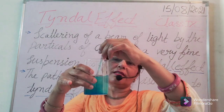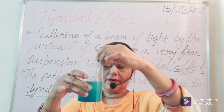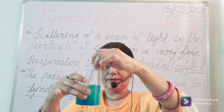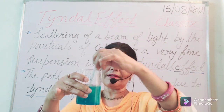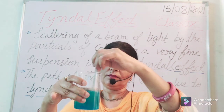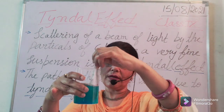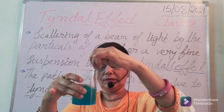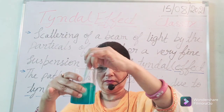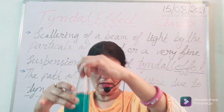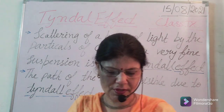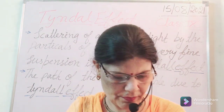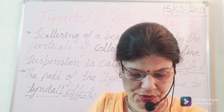This is a solution of copper sulphate, and I am going to prepare two solutions. So I am stirring it properly. This is a blue coloured solution of copper sulphate. So let us keep it for some time, then I am going to prepare a colloidal solution.